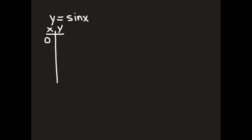I'm going to go over the basics of y equals sine x and y equals cos x. If we take a look at the five most important points — splitting up one full cycle to five points, because one cycle is 0 to 360 — plugging in: sine of 0 is 0, sine of 90 is 1, sine of 180 is 0, sine of 270 is negative 1, and sine of 360 is 0. That's just using our calculators.